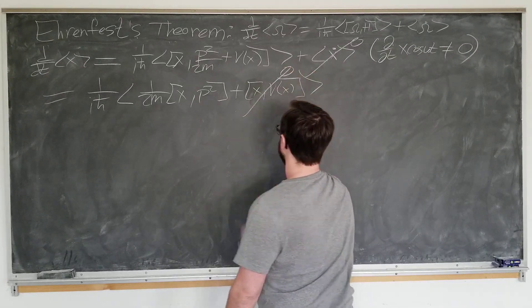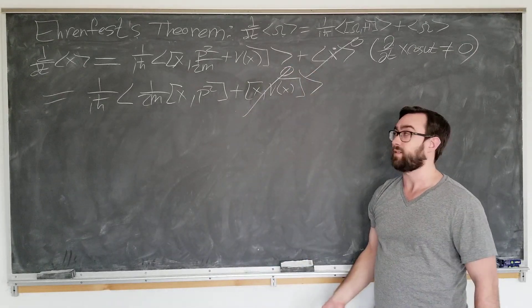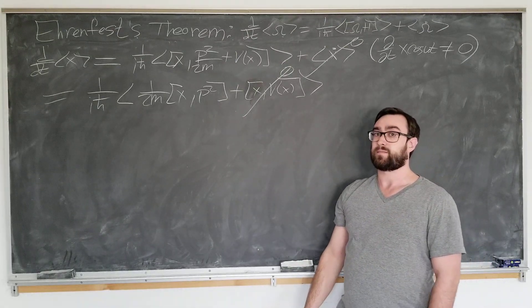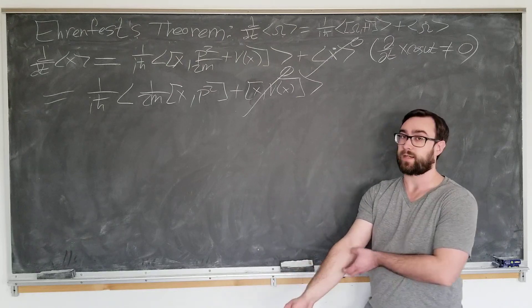So this one's easy, it's zero, since x and v of x are simple functions of x. Think of v of x to be one half m omega squared x squared, just the harmonic oscillator potential that obviously commutes with x.